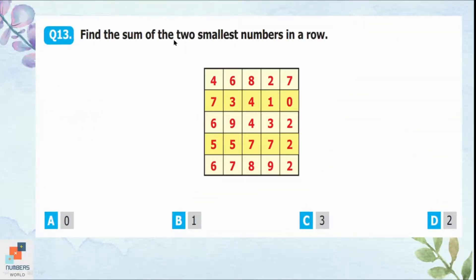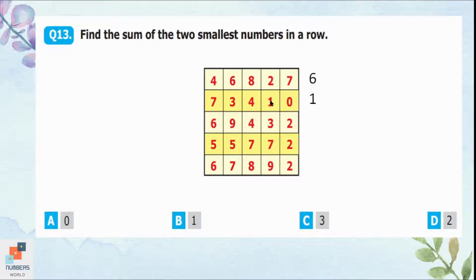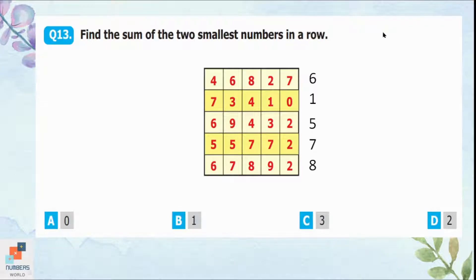Question 13: Find the sum of the two smallest numbers in each row. In row 1, the two smallest numbers are 2 and 4, totaling 6. In row 2, the two smallest are 0 and 1, totaling 1. Repeating this for the remaining rows, and looking at all the sums, 1 is the only value present in the given options and is also the smallest among all sums. Option B is correct.